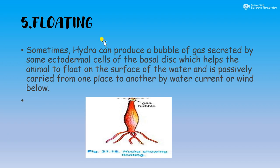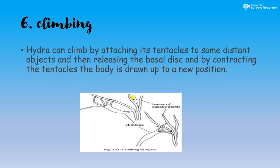The fifth type is floating. Sometimes Hydra can produce a bubble of gas secreted by ectodermal cells of the basal disc, which helps the animal float on the surface of water and be passively carried from one place to another by water currents or wind. The sixth type is climbing: Hydra climbs by attaching its tentacles to some distant object, then releases the pedal disc, and by contracting the tentacles the body is drawn up to a new position.